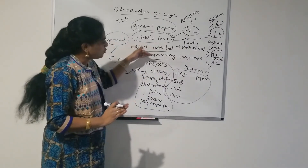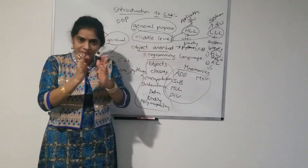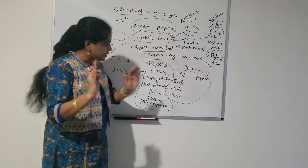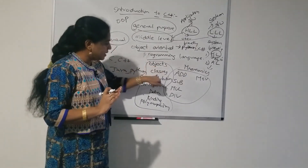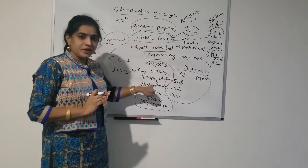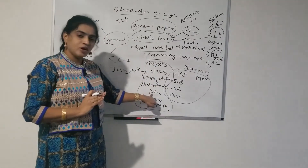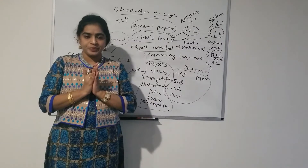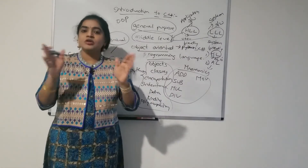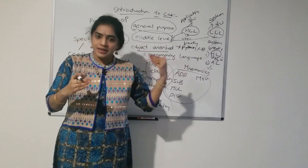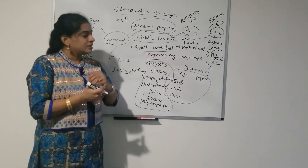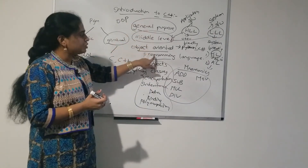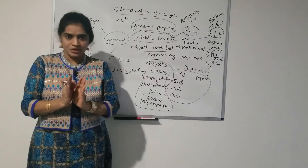For now, just remember what object oriented programming languages means — the concepts we are going to learn: objects, classes, encapsulation, inheritance, data binding or dynamic binding, and polymorphism. All these concepts we are going to learn in C++. So, C++ is a general purpose, middle level, object oriented programming language.